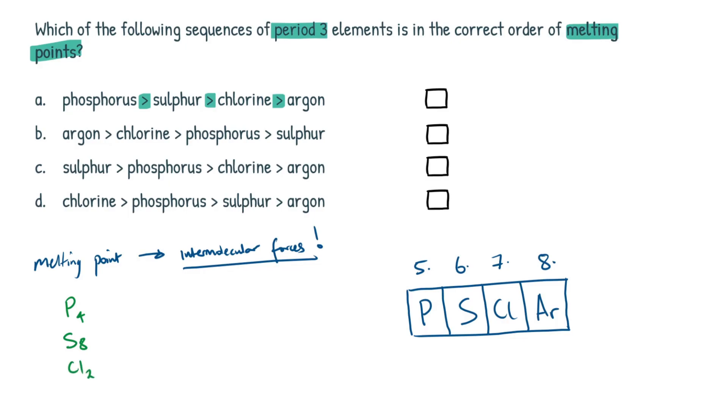So I guess tetra, octa, and diatomic, I suppose. I'm not too sure, to be honest. And these would all be simple molecular structures, okay? So they're covalent, but they're simple molecular. And simple molecular structures all have van der Waals forces, okay?